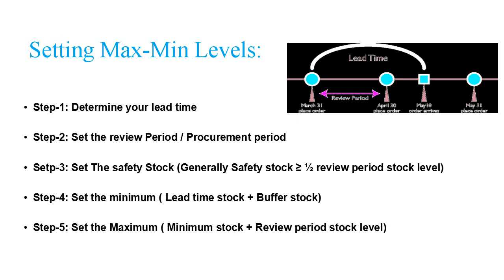Maximum and minimum levels can be set by following these steps. First, determine your lead time. Then set the review period — say one week, one month, or three months. Calculate the stock required during this review period. Usually 50% to 60% of the review period stock is set as the safety stock. The minimum stock level equals lead time stock — that is, stock required during the lead time — plus the safety stock or buffer stock.